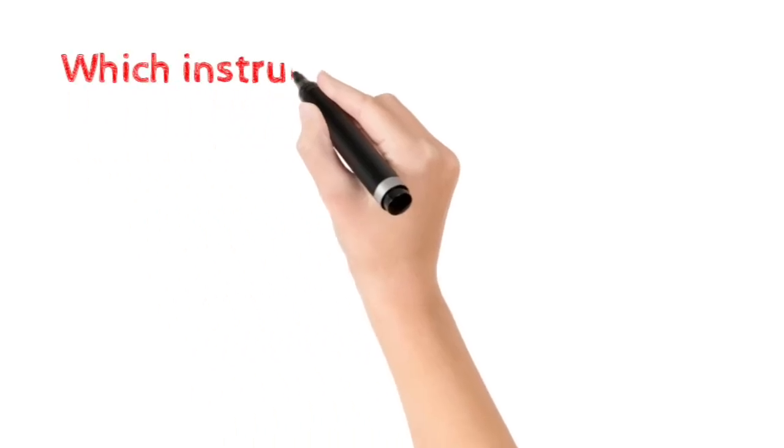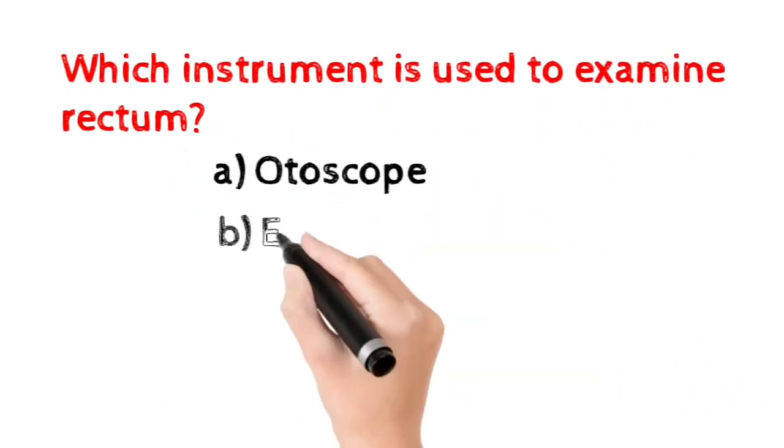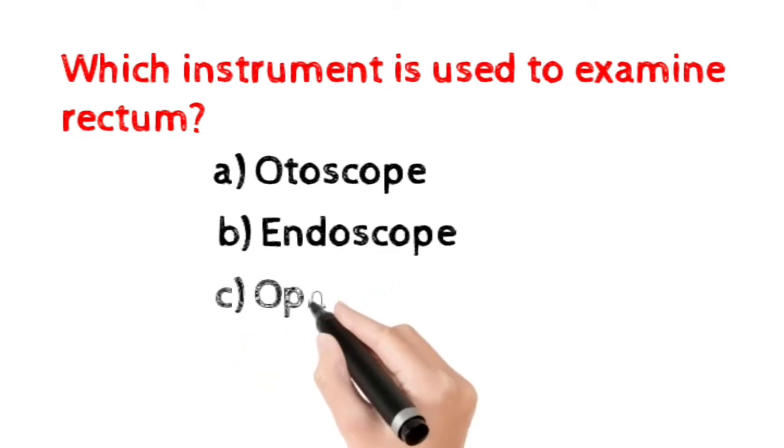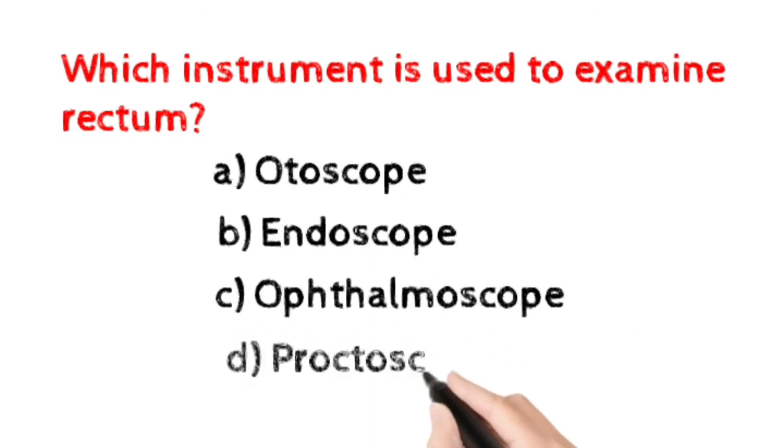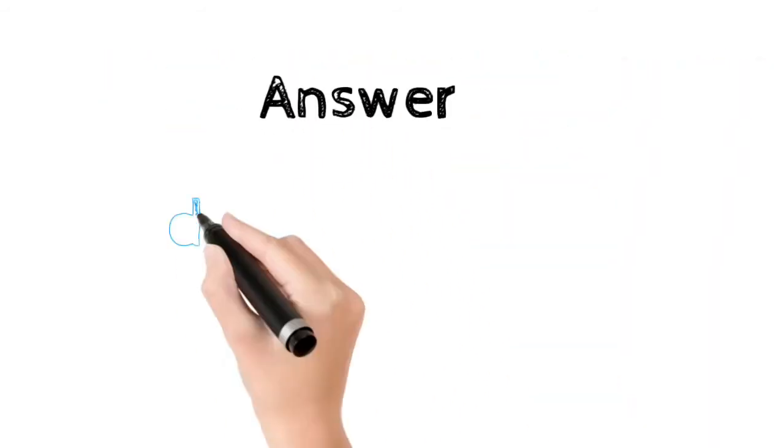Number six: Which instrument is used to examine rectum? Option A: otoscope. Option B: endoscope. Option C: ophthalmoscope. Option D: proctoscope. Here the correct answer is option D, proctoscope.